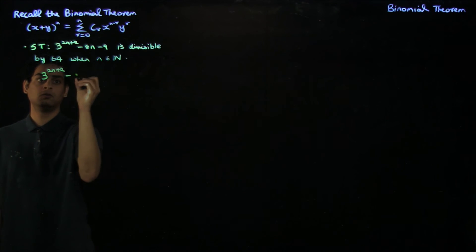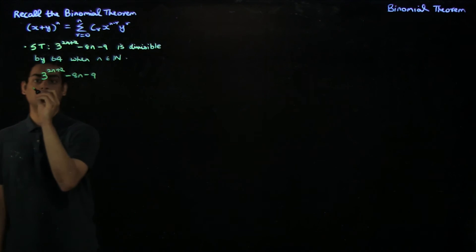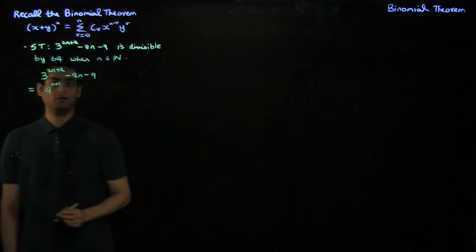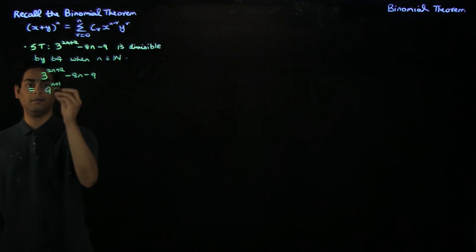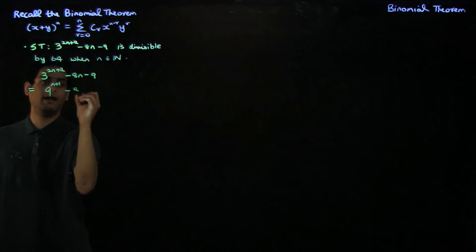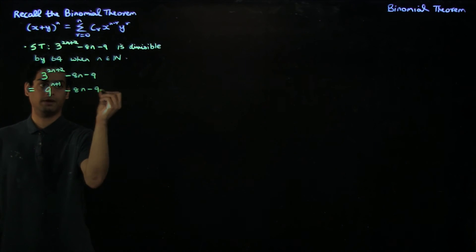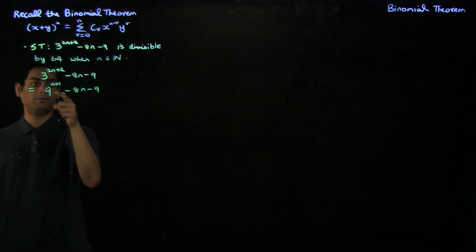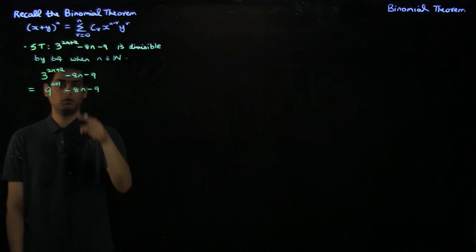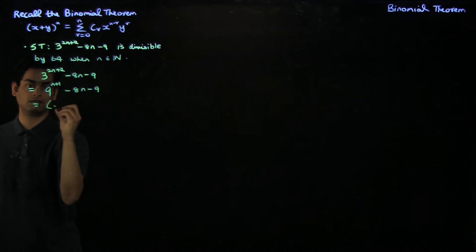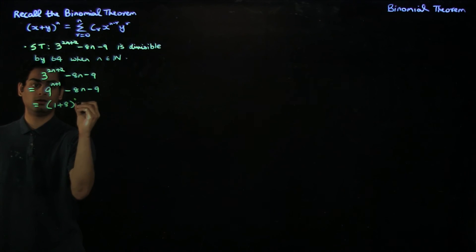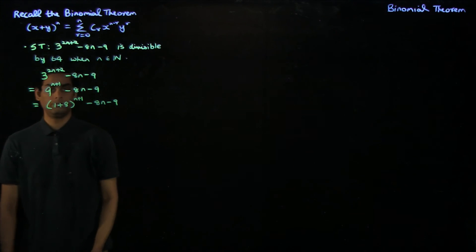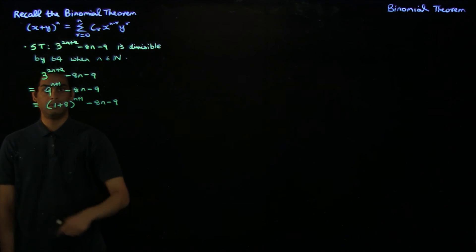3 power 2n plus 2 minus 8n minus 9 can be written as 9 power n plus 1, where I've just taken a power of 2 into 3 and written 3 squared as 9, and you still have minus 8n minus 9. This looks a little more promising because you have 9 power n plus 1, and you have a 9 and an 8n. So you can get rid of the 8n by writing 9 as 1 plus 8, raise to the power n plus 1, and you have minus 8n minus 9. Now you have a term which you can expand using the binomial theorem.